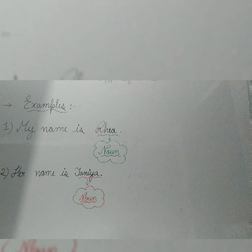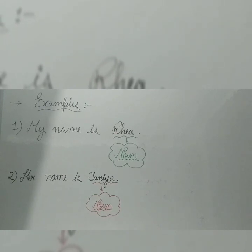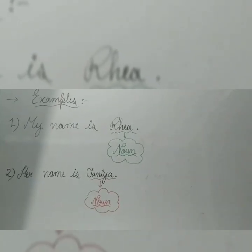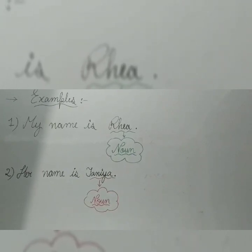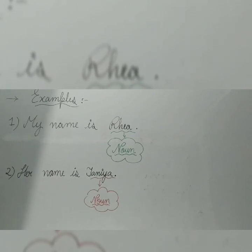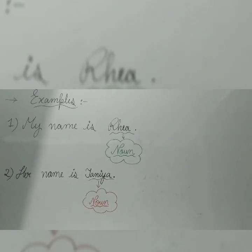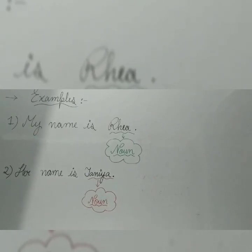Take a look, children. I have made some examples for you with nouns. Number one: my name is Ria. I am telling about my name and my name is Ria, so Ria is a noun here. Second: her name is Tanya. What are we telling here? Her name is Tanya — Tanya is a noun. So I have underlined the nouns.